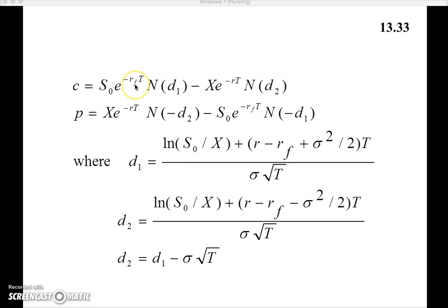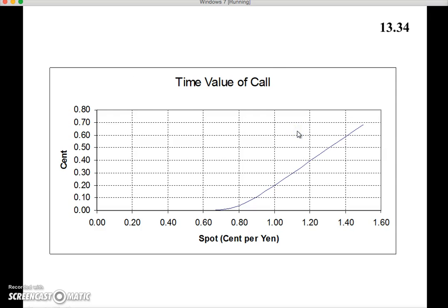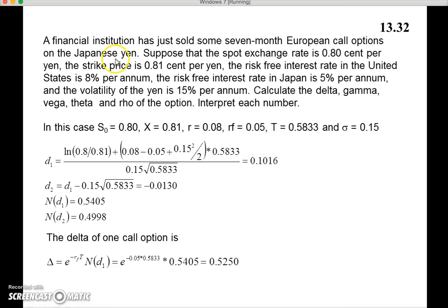For all the world, this is exactly identical to Black-Scholes we've used before, except we substituted r_f for q. I took this example from John C. Hull, Options, Futures and Other Derivatives. A financial institution has just sold some seven-month European call options on the Japanese yen. The spot rate is 0.8 cents per yen, the strike price is 0.81 cents per yen, the risk-free interest rate in the United States is 8% per annum, the risk-free interest rate in Japan is 5%, and the volatility of the yen is 15%. Calculate delta, gamma, vega, theta, and rho. Interpret each number.